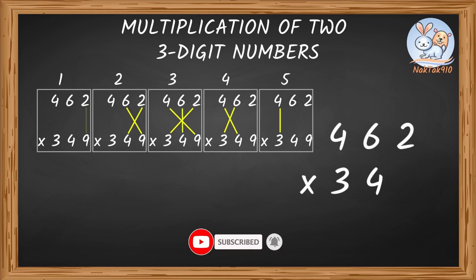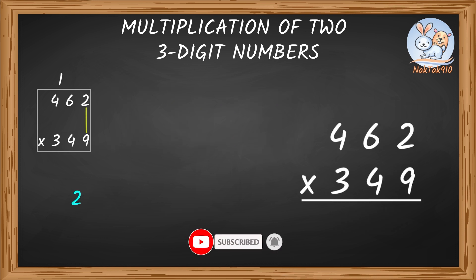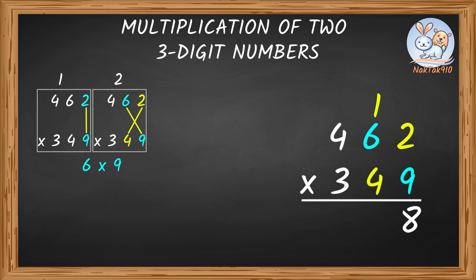462 times 349. 2 times 9 is 18. 8 and carry 1. 6 times 9 is 54. 4 times 2 is 8. 54 plus 8 equals 62. 62 plus 1 is 63. So, 3 and carry 6.